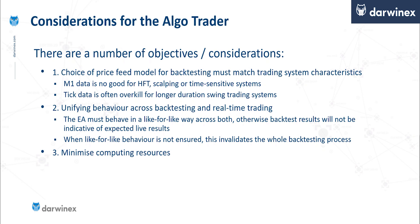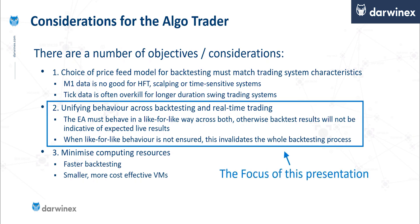The third consideration in relation to data is minimising computing resources. For example, if you don't use tick data then you will clearly get faster backtests. Furthermore, depending on how you control the price feed in code in your EA, this will determine how big the VMs are that you have to run your systems on, and by reducing VM computing that will also reduce your costs. But the focus of this presentation is on unification of the behaviour between backtesting and real-time trading, and in order to do this, this requires price data controlling code within your algo whenever you're using M1 data.